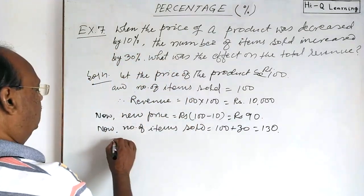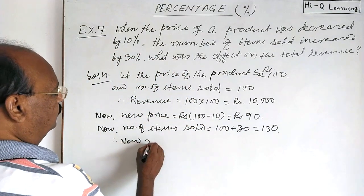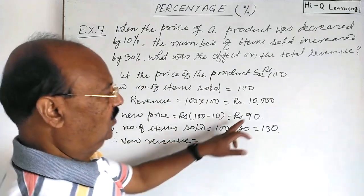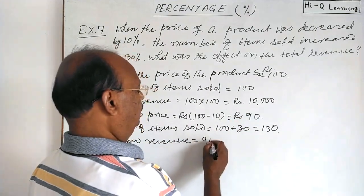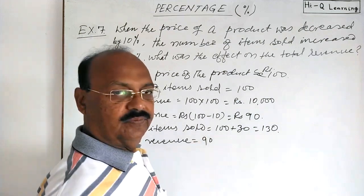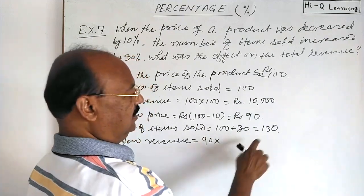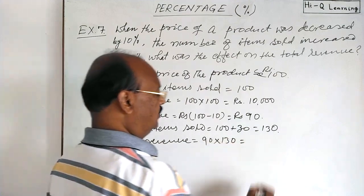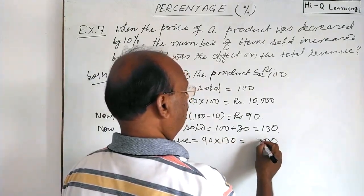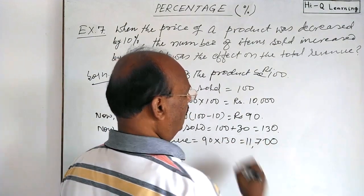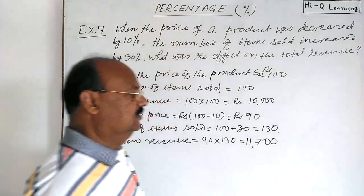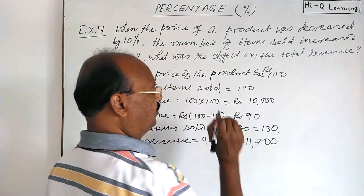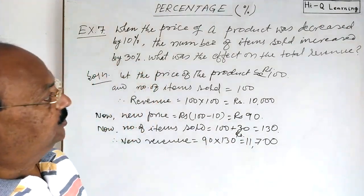So now in this case, the new revenue generated will be cost of each item multiplied by number of items — that is 90 multiplied by 130 — and this is equal to rupees 11,700.